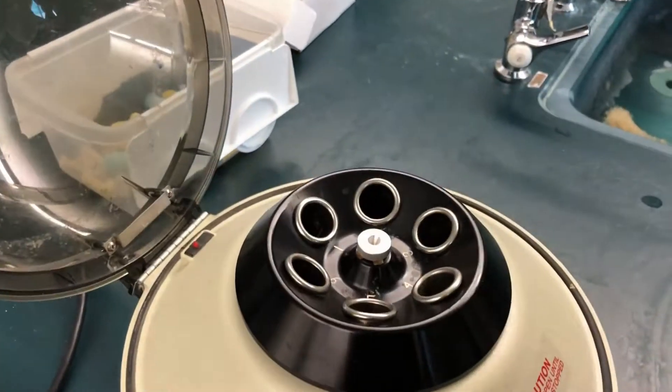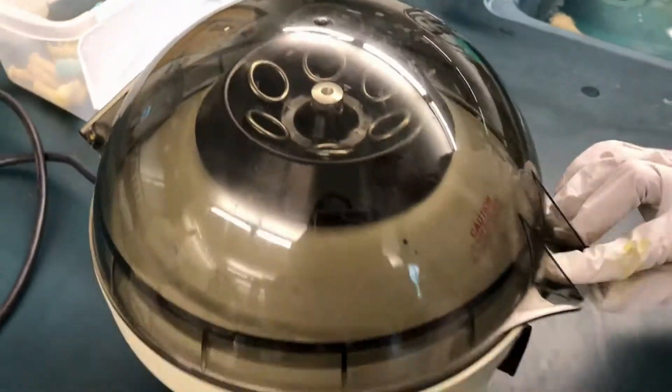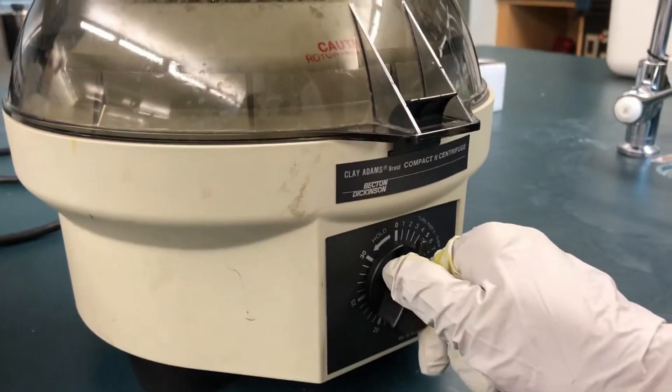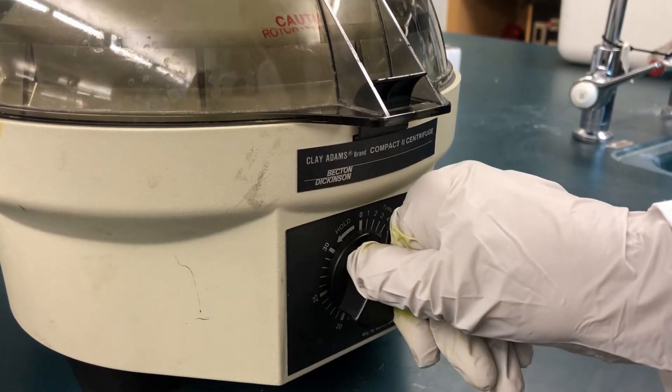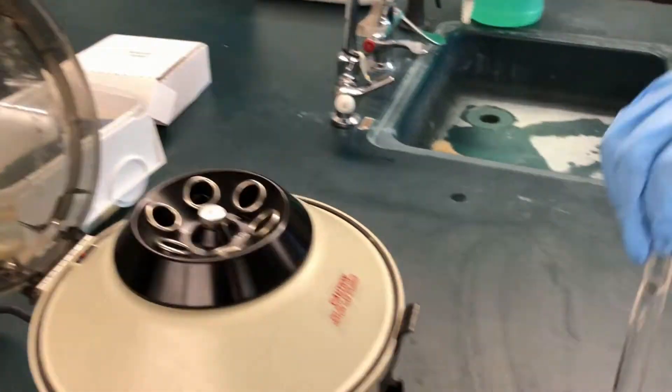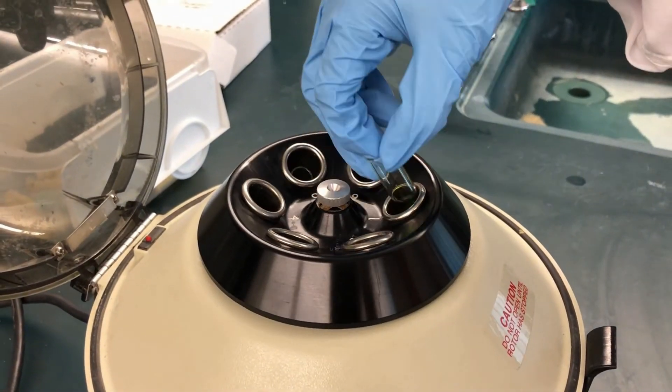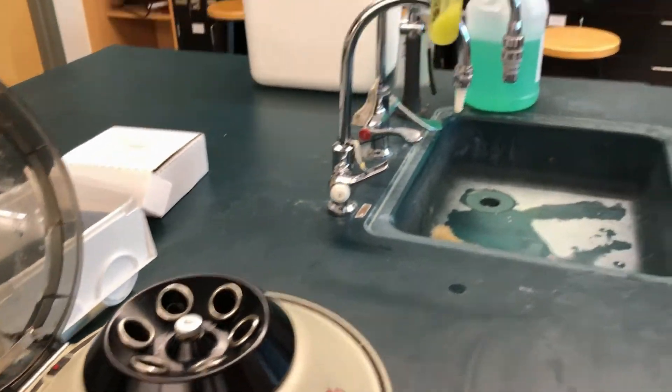Next, centrifuge for about 1 minute to separate the layers. Remember to balance the centrifuge with another test tube of equal mass or volume opposite of your test tube. After the centrifuge stops completely, carefully remove your test tube. You should see the layers leaving the petroleum ether and the pigments on the top layer.